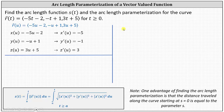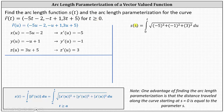Now we can set up the integral for the arc length function S of t. We have S of t equals the integral from 0 to t — the lower limit is 0 because we're given t greater than or equal to 0 — of the magnitude of R prime of u, which is the square root of the sum of the squares of negative 5, negative 1, and 3 du. Simplifying the square root, we have the square root of 35.